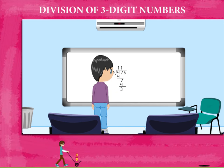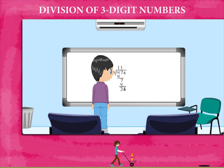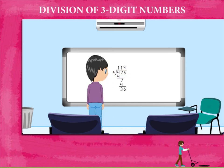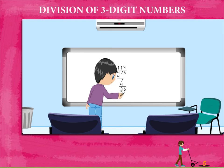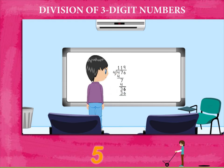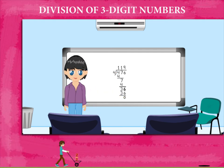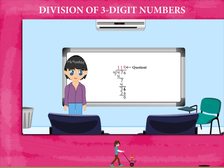He copies the last digit 6 and gets 36. 4 nines are 36, so Jamie writes 9 on the top and 36 down below. 36 minus 36 is equal to 0, so there is no remainder and the answer or quotient is 119. Nice going Jamie!